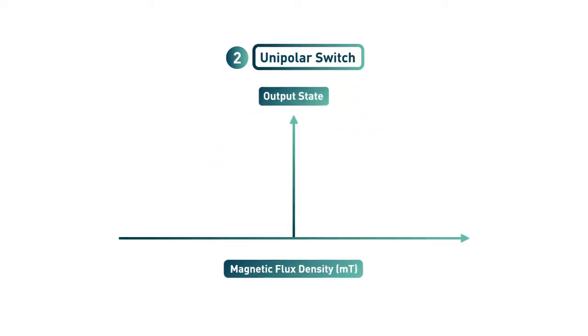The second group is the unipolar switch. Here the sensor is active in only one field spectrum. This can be either north or south. When the field that is applied is above the BOP threshold, the sensor will enable its output. When you remove the magnet from the sensor, you will go under the BOP threshold and the sensor will disable the output. A switch is mostly used for position detection.